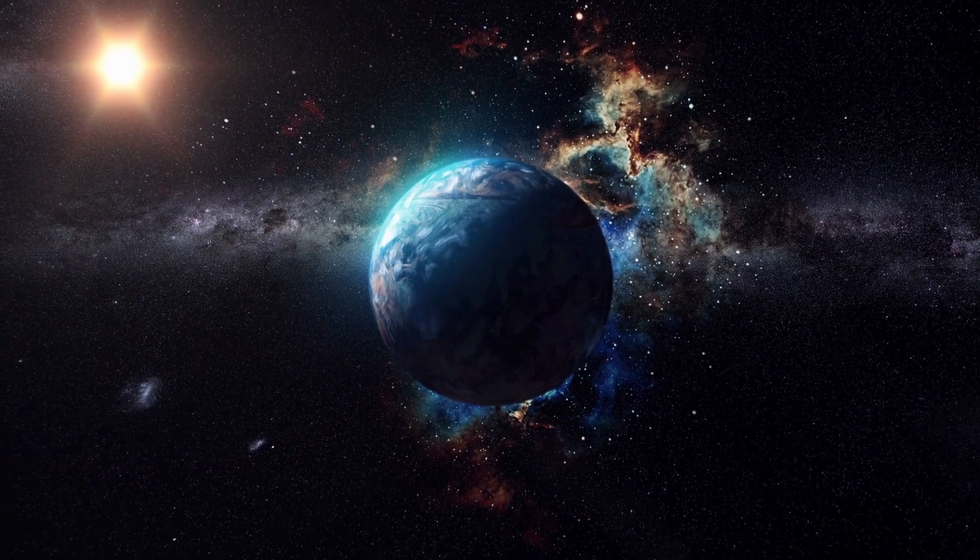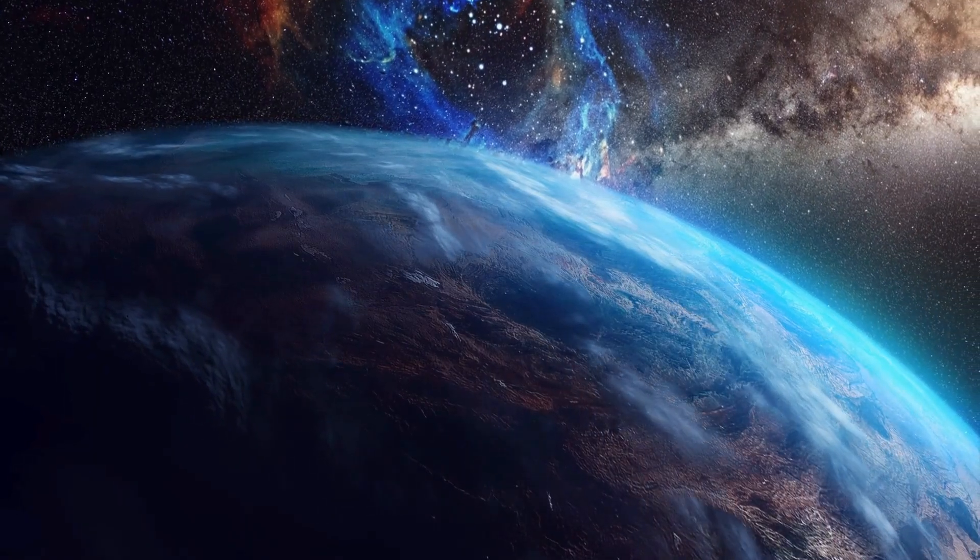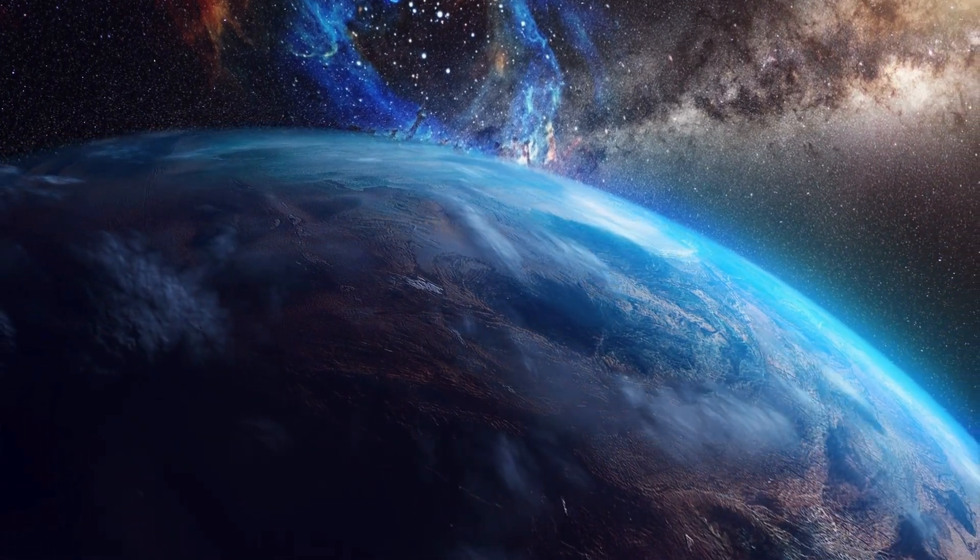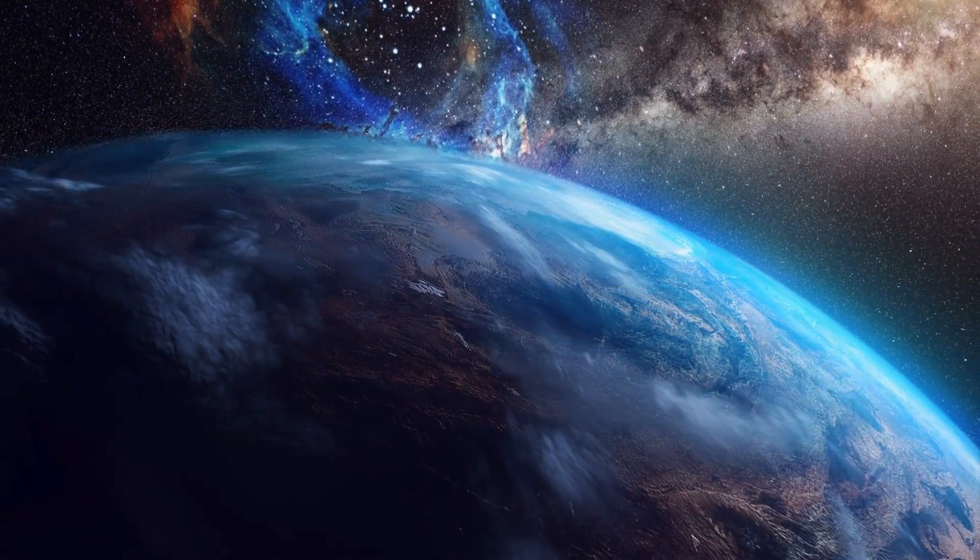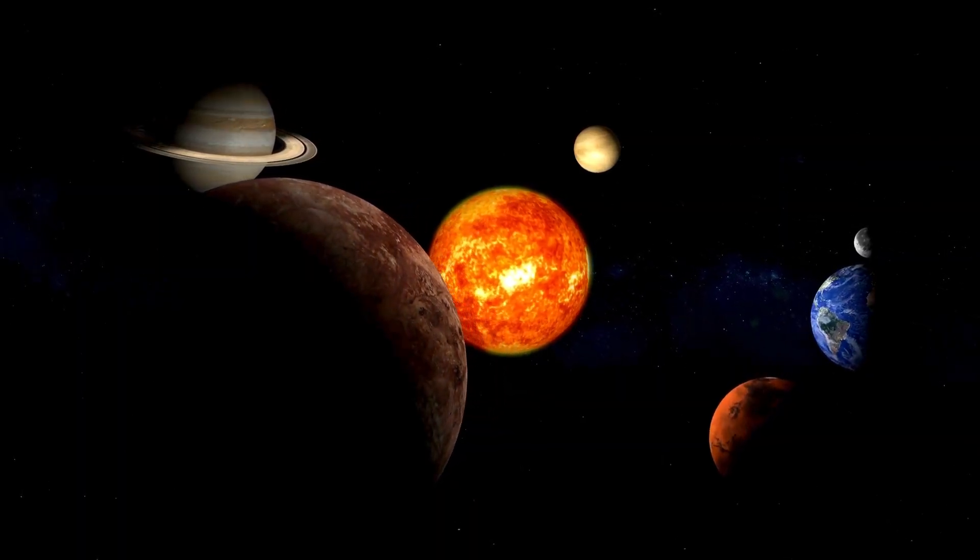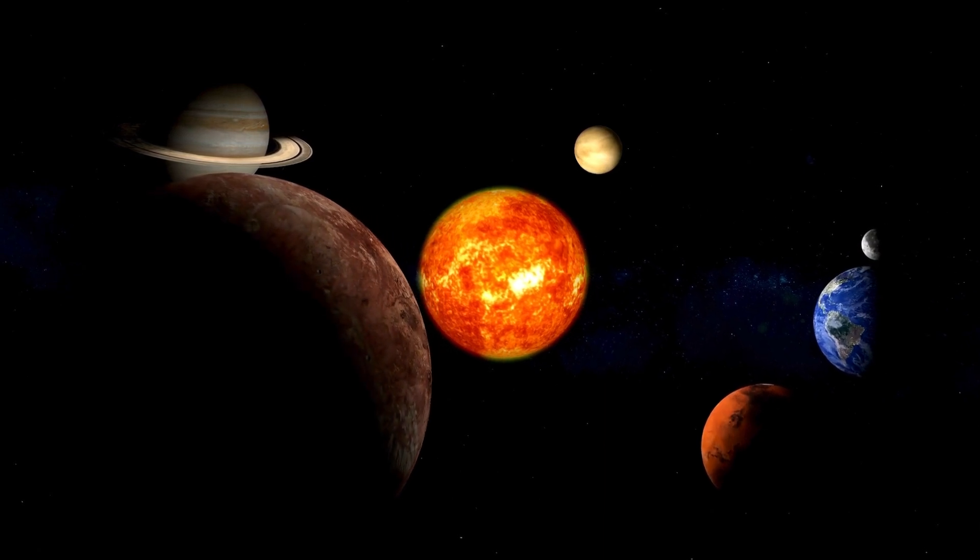Pluto's journey around the Sun is unlike any other planet in our solar system. It takes a staggering 248 years to complete a single orbit, meaning since its discovery in 1930, it hasn't even finished one full revolution. But the intrigue doesn't stop there.